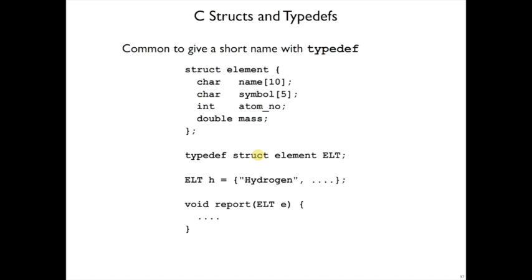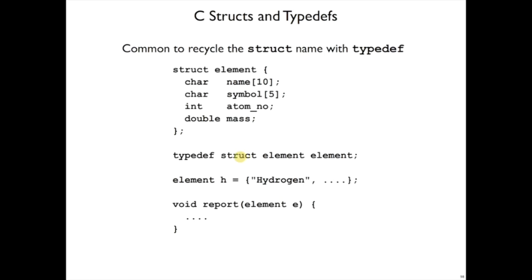Nothing prevents the namespace of struct from overlapping the namespace of types. So in fact, it's common to write something like this. typedef struct element has a short name element. And again, wherever I write element, it's a shorthand for struct.